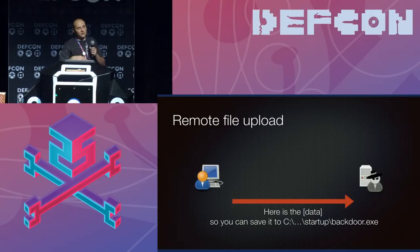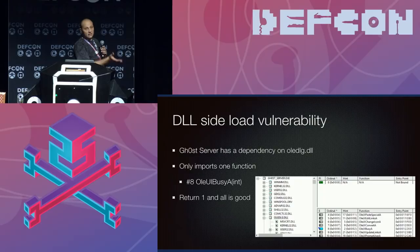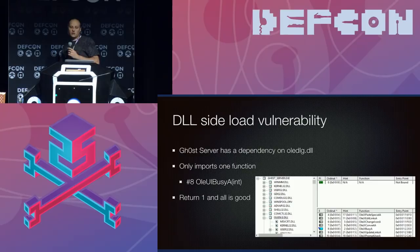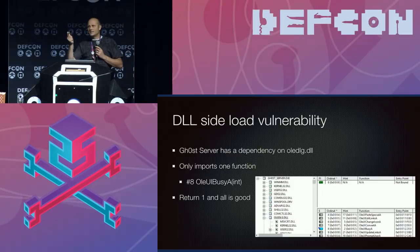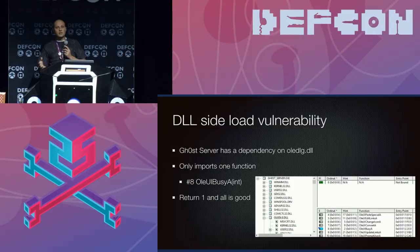Ghost RAT is also vulnerable to a DLL sideload attack. If you drop a file named OLEDLG.dll in the same folder as the Ghost RAT executable, it will try to load that file whenever Ghost starts up. It looks for only one exported function — OleUIBusy — which just needs to return 1 to indicate 'not busy.' You make your malware into a DLL that exports this one function returning 1, and Ghost loads it every time it starts up without knowing anything is wrong.